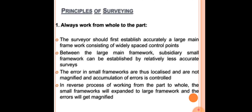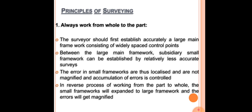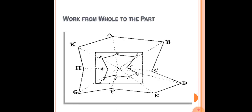Coming to the first principle — working from whole to part. Whenever we have to survey a large area, we have to always start fixing points for the larger area first. We should not start from a particular point and cover the whole area. Instead, we will always first establish some main framework, which consists of widely spaced control points. In this area, you can see the points A, B, C, D, E,